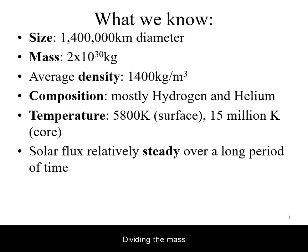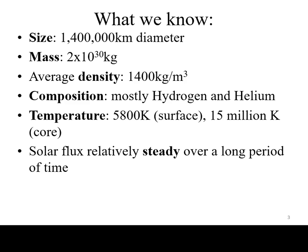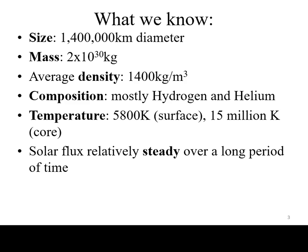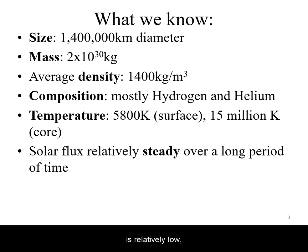Dividing the mass by the total volume of the Sun, we can calculate the average density. The average density of the Sun is relatively low — less than one-third that of Earth.